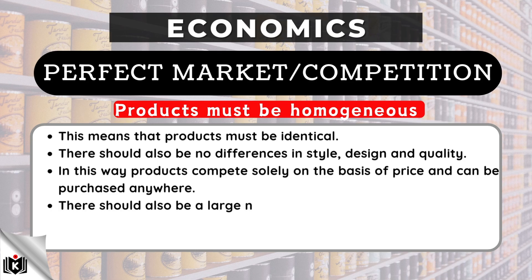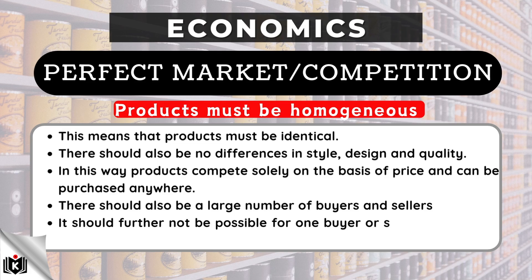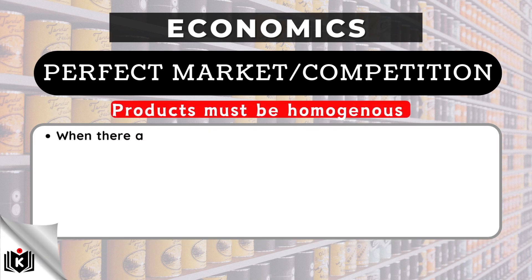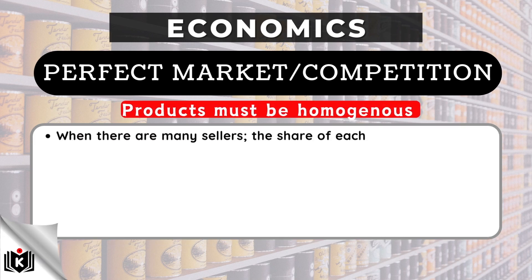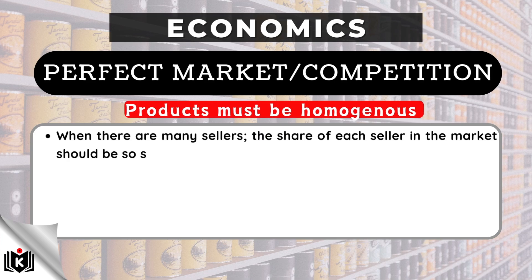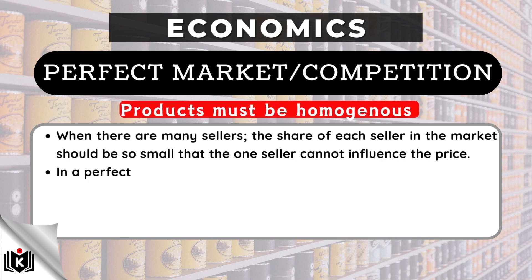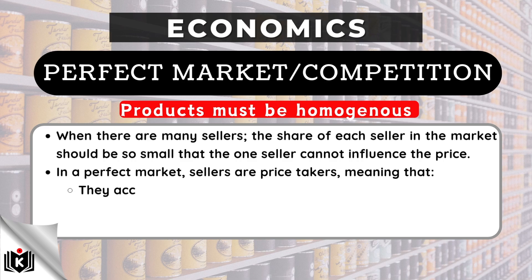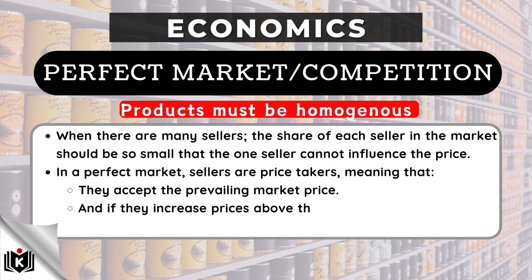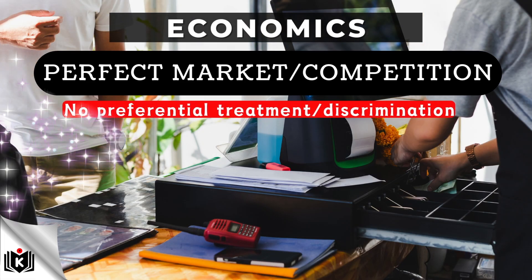There should also be a large number of buyers and sellers. It should not be possible for one buyer or seller to influence the price. When there are many sellers, the share of each seller in the market should be so small that no one seller can influence the price. In a perfect market, sellers are price takers, meaning they accept the prevailing market price, and if they increase prices above the market price, they will lose customers.